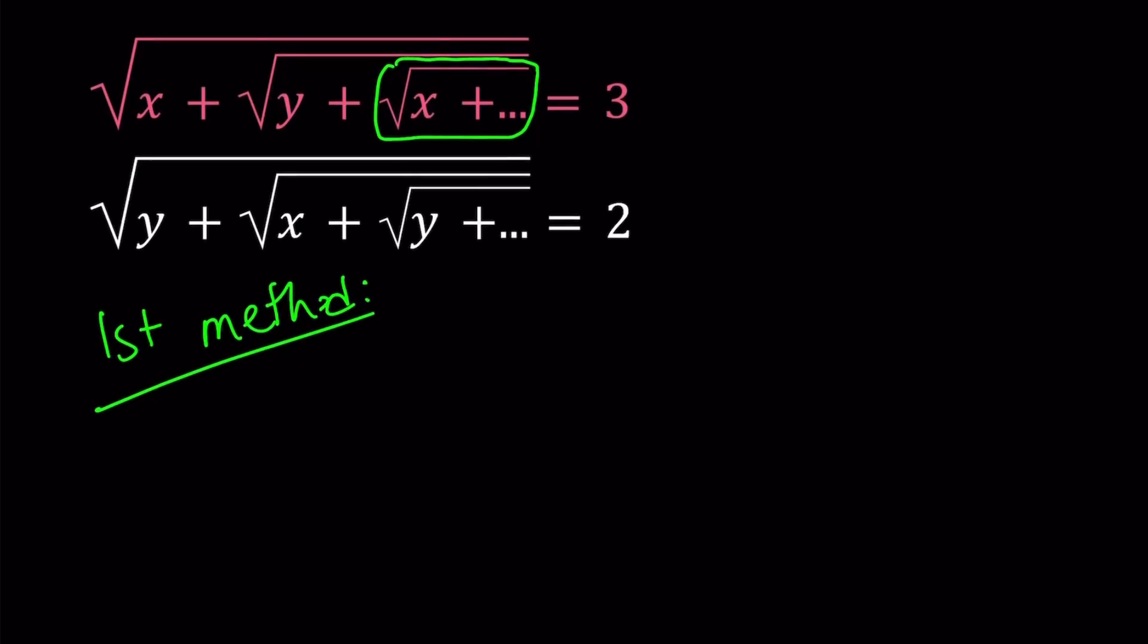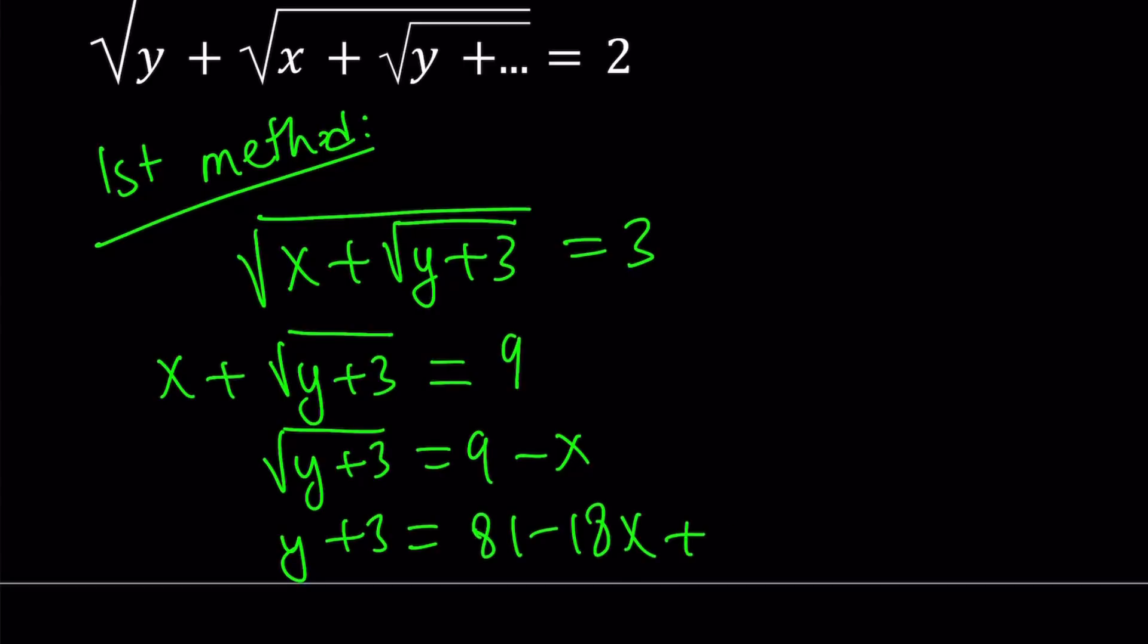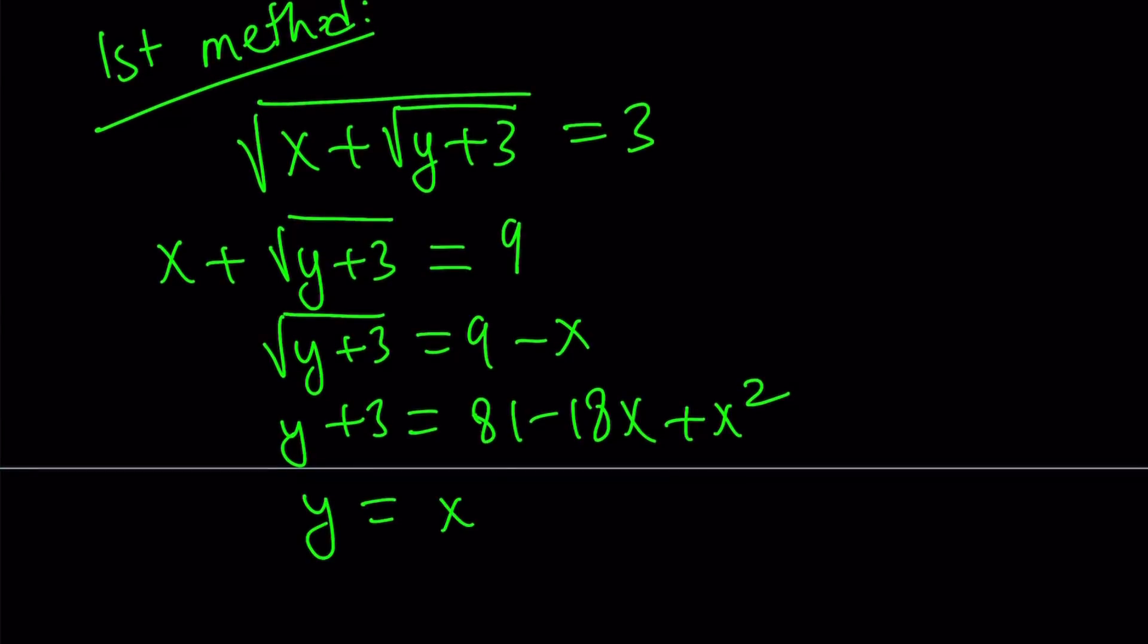So we can write this as the square root of x plus the square root of y plus 3, which is the result, equals 3. Great. Let's go ahead and simplify this expression. Square both sides, and you're going to get 9. Subtract x from both sides and square both sides again. This gives you y plus 3 equals 81 minus 18x plus x squared. And if you arrange the terms, like isolate the y here, you're going to get x squared minus 18x plus 78.